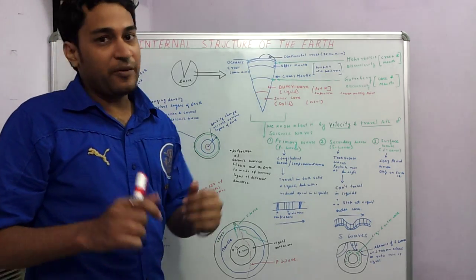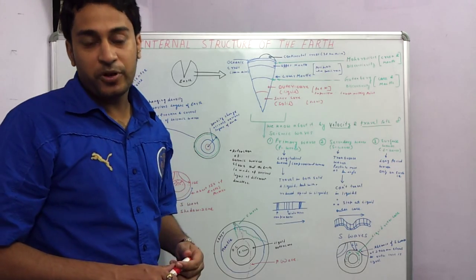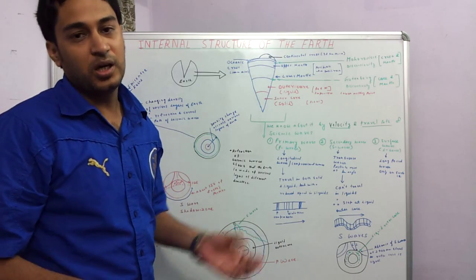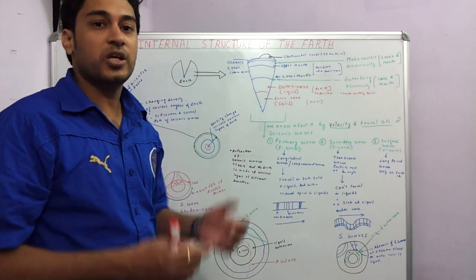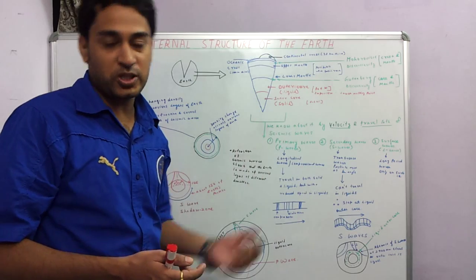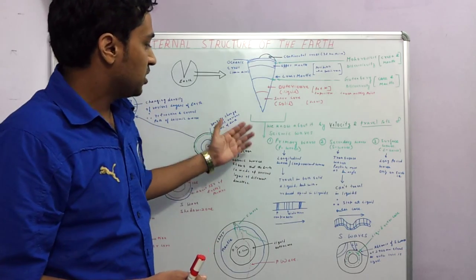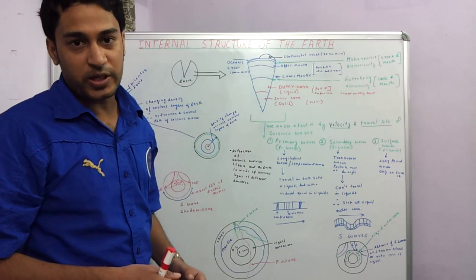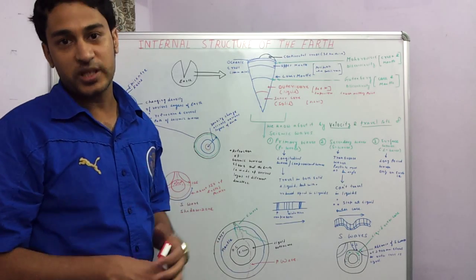People have used in the past different methods to understand the internal structure of the earth. People earlier used volcanic eruptions to understand the internal structure. People even suggested the use of meteorites which fall on the earth. But the use of seismic waves is the best method to understand the internal structure of the earth, and it is also the most acceptable one.